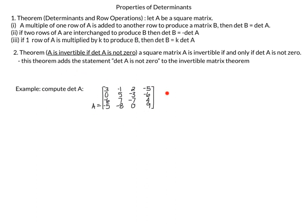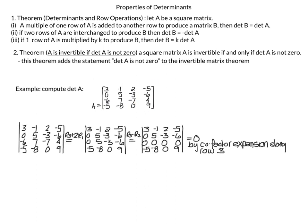We compute the determinant of the 4×4 matrix with column vectors (3, 0, −6, −5), (−1, 5, 7, −8), (2, −3, −7, 0), and (−5, −6, 4, 9). Replacing R3 with R3 plus 2R1 yields row 3 as (0, 5, −3, −6). Rows 2 and 3 are then the same, so replacing R3 with R3 minus R2 gives a row of all zeros. Expanding along the third row gives determinant equal to zero.